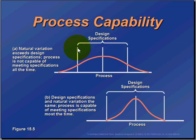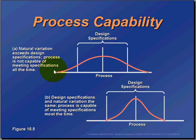This is our lower control limit and our upper control limit. We can see a process here that's not capable of meeting specifications all the time, because some values are going to fall way out here under the tail of this curve, and some are going to fall out here above the upper control limit.